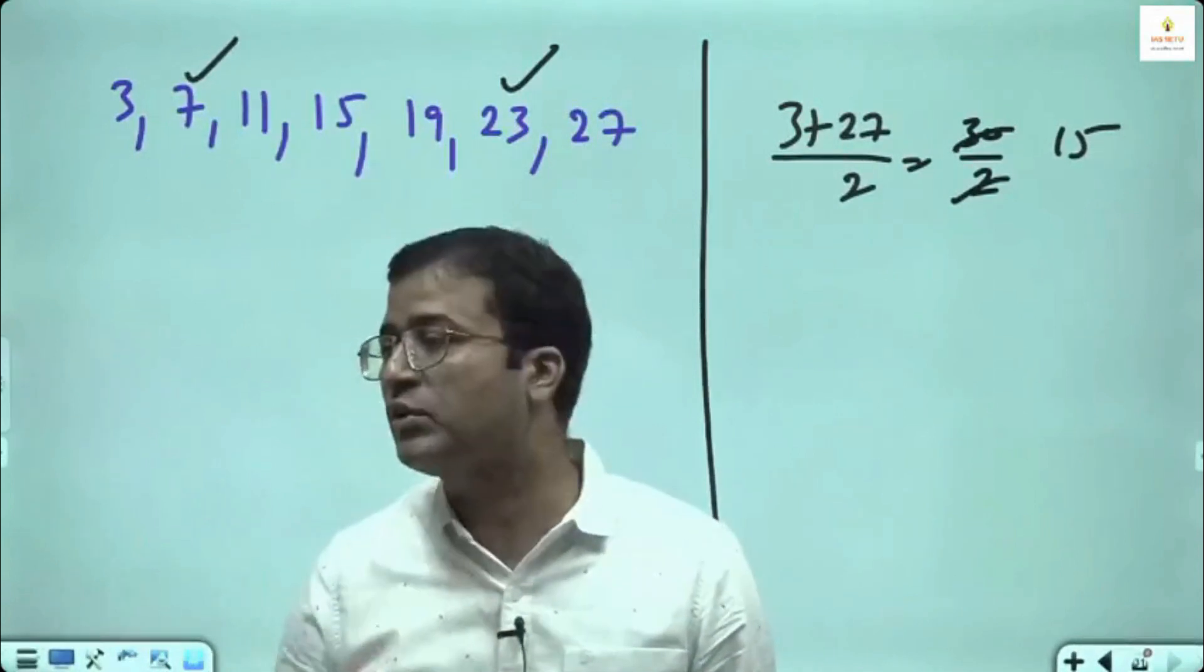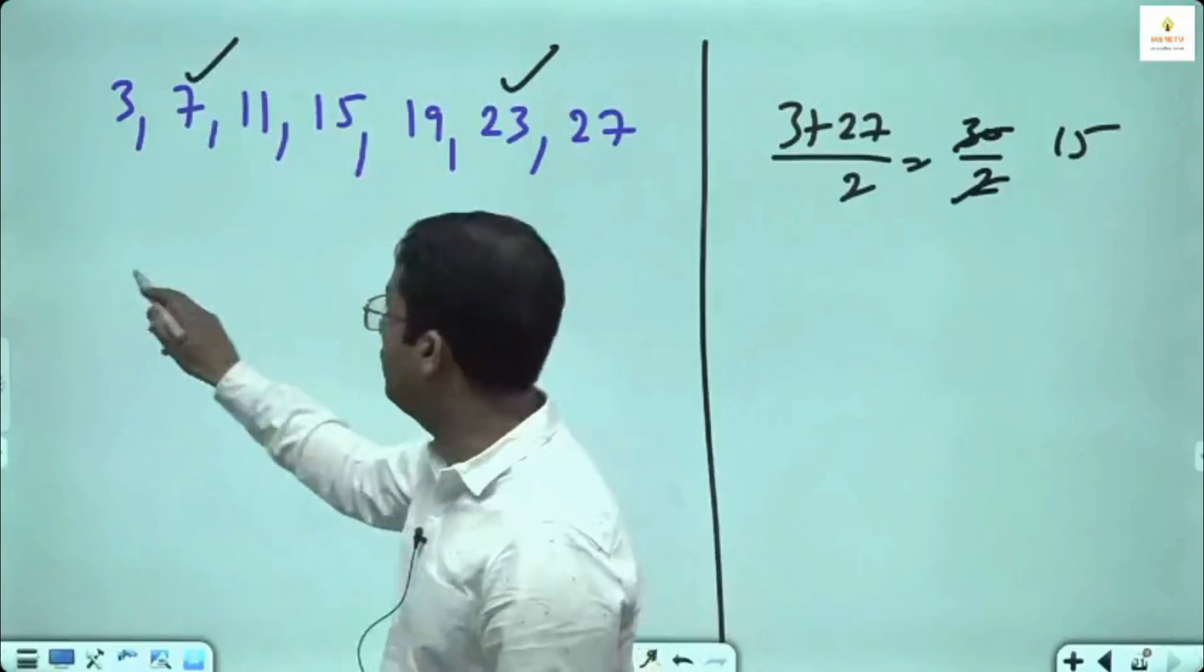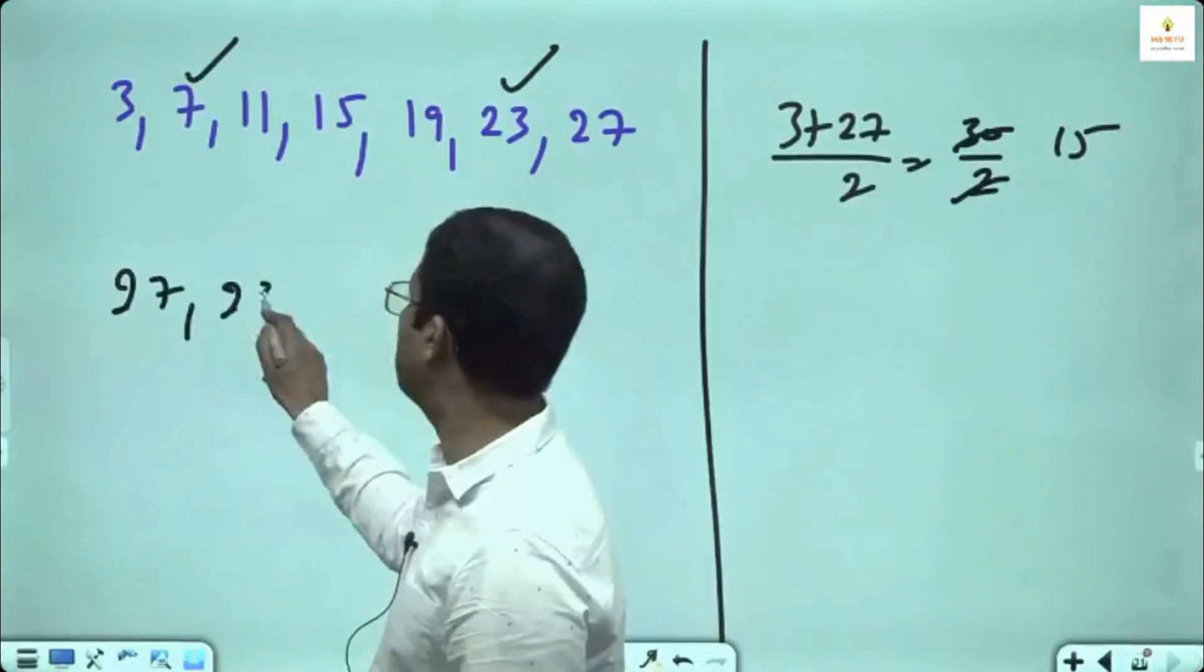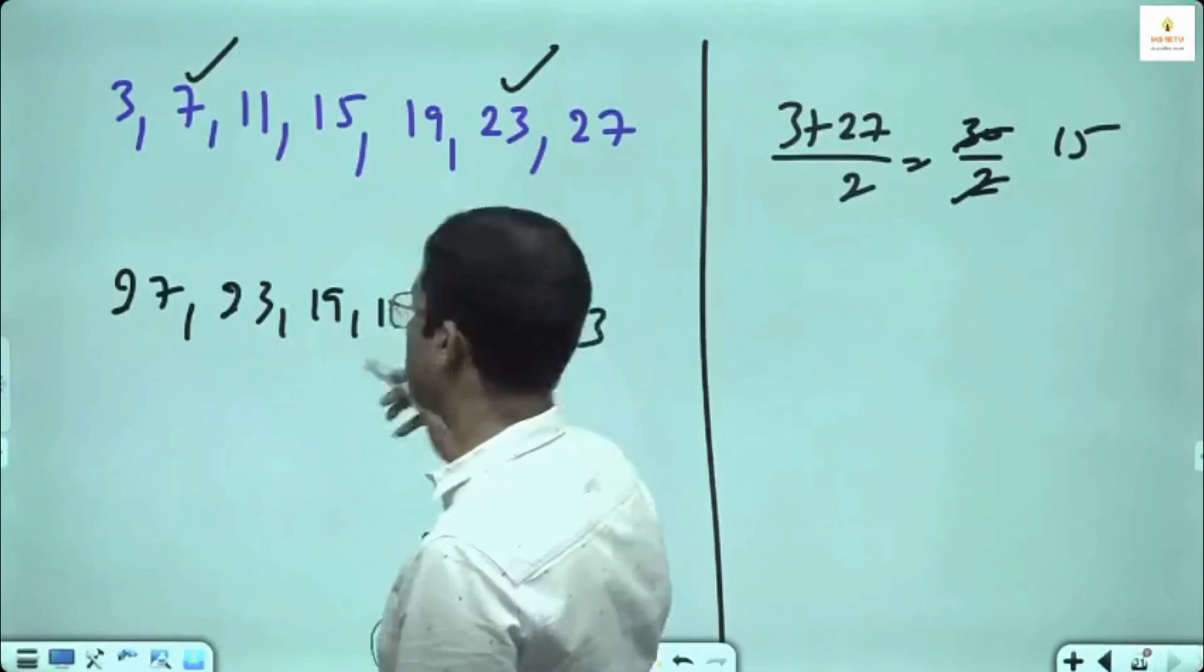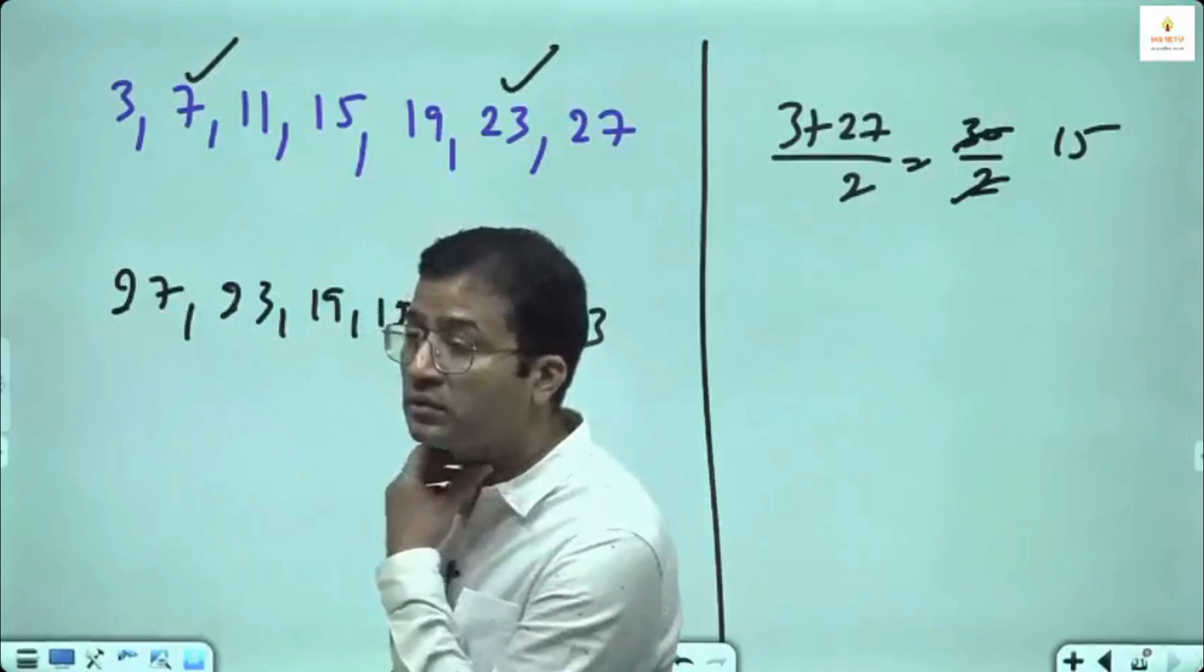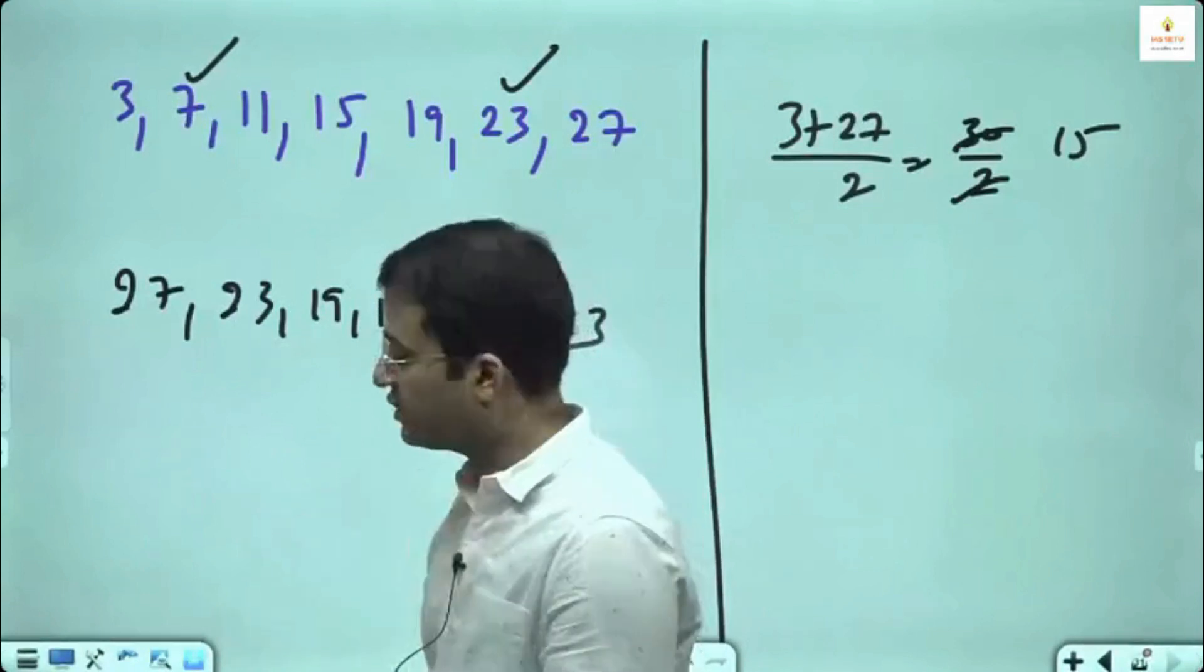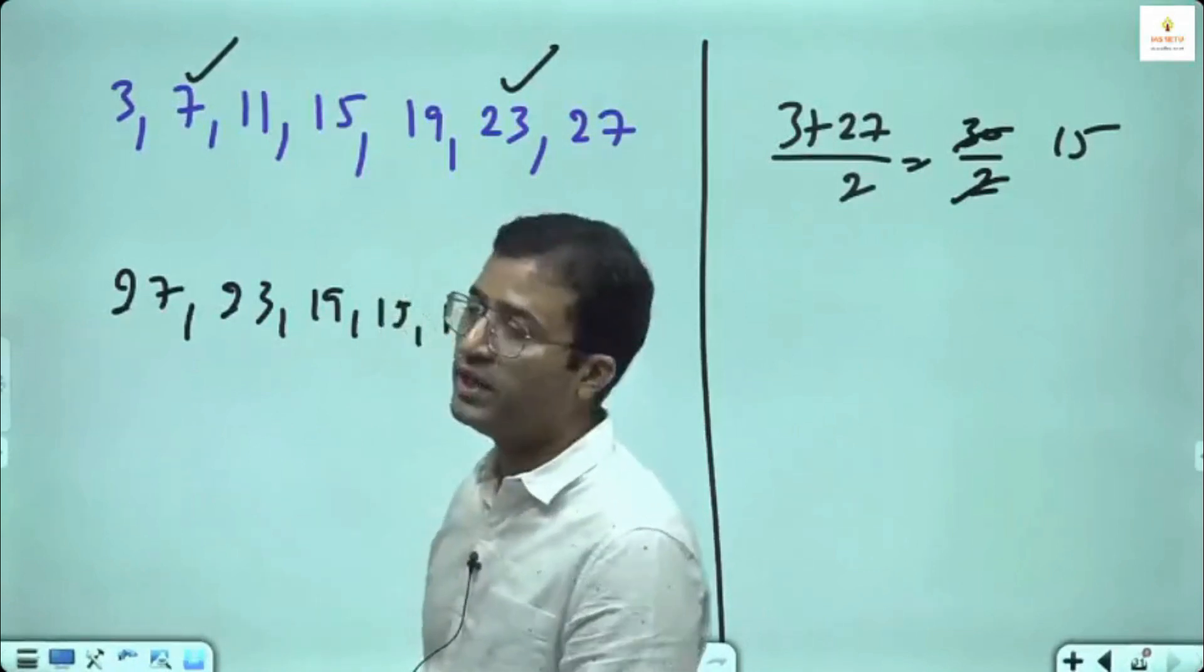It can be a decreasing order also. If we do 27, 23, 19, 15, 11, 7, 3, then also it is applicable. Yes, it has to be that, otherwise it will not be AP.